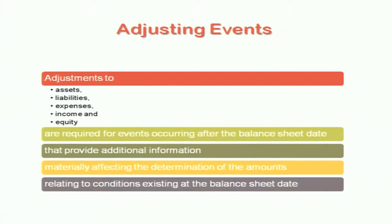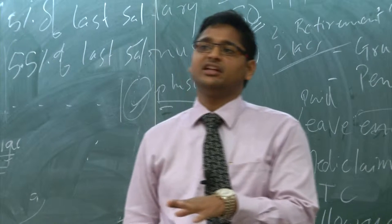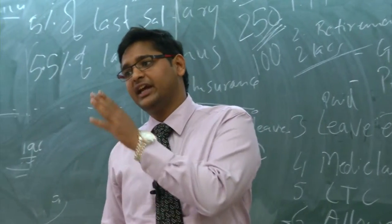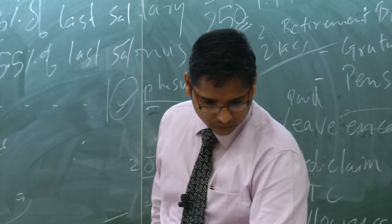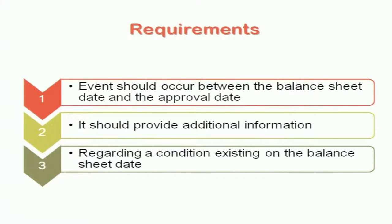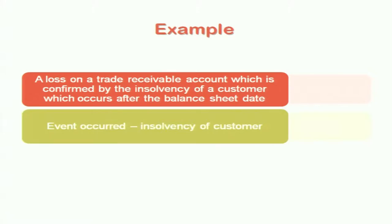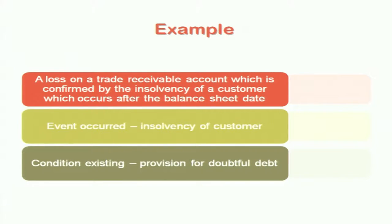When I say adjustments, they might be required in assets, liabilities, expenses, income, or capital fund - for events occurring after the balance sheet date that provide additional information materially affecting the determination of amounts relating to conditions existing on the balance sheet date. So adjusting events only relate to conditions existing as on 31st March. The event should occur between the balance sheet date and the approval/signing date, and it should provide additional information regarding a condition that existed as on 31st March.